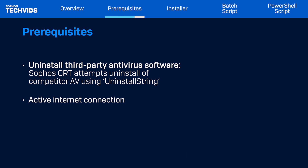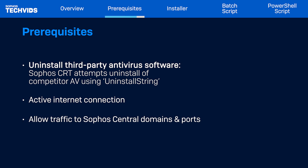Next, all devices must have an active internet connection. In addition, make sure to allow all traffic to the domains and ports required for communication to and from Sophos Central. Refer to the linked documentation for further information. If you have devices to protect that cannot be connected to the internet directly, refer to our documentation on update caches, also linked in the description.